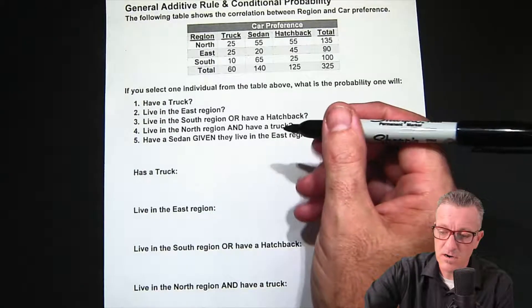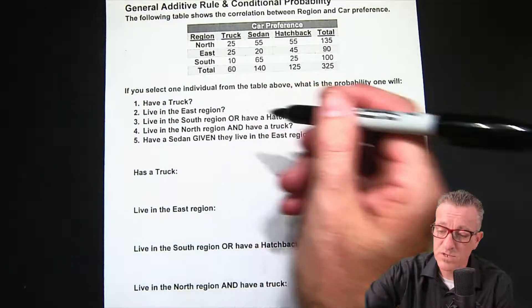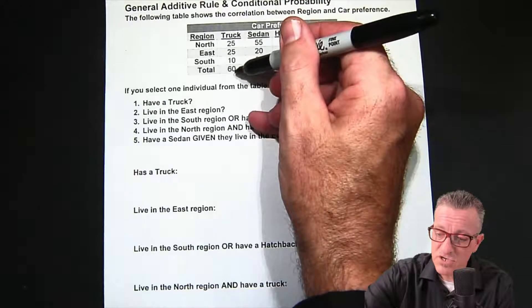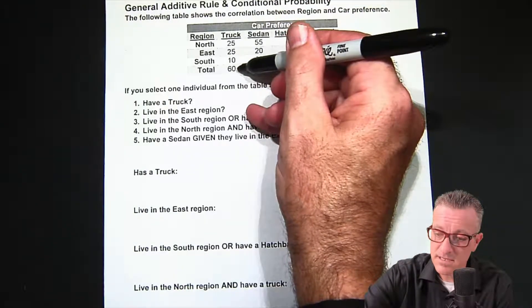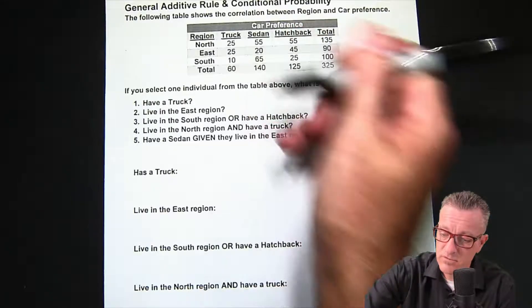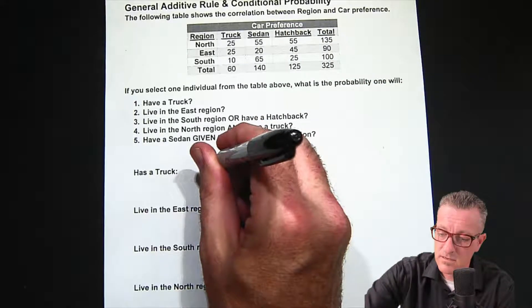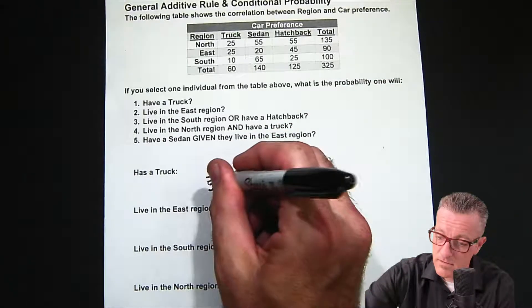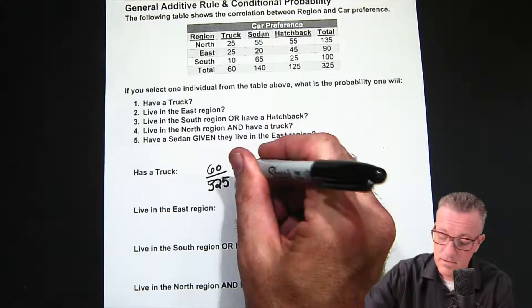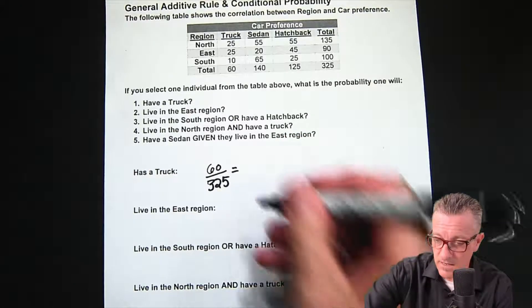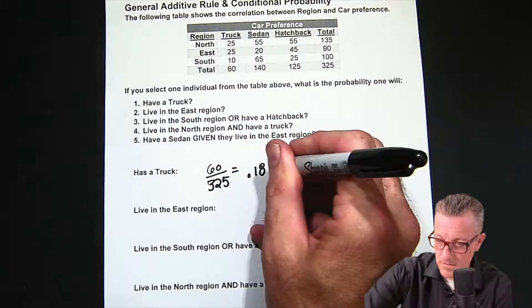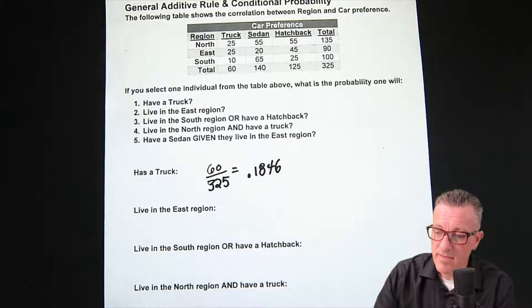Has a truck. Those first two questions are more getting familiar with the table. So has a truck - if we add up all the ones that have a truck, we have a total of 60 people that have a truck. So it would be 60 over 325, and if we work that out it ends up being approximately 0.1846.